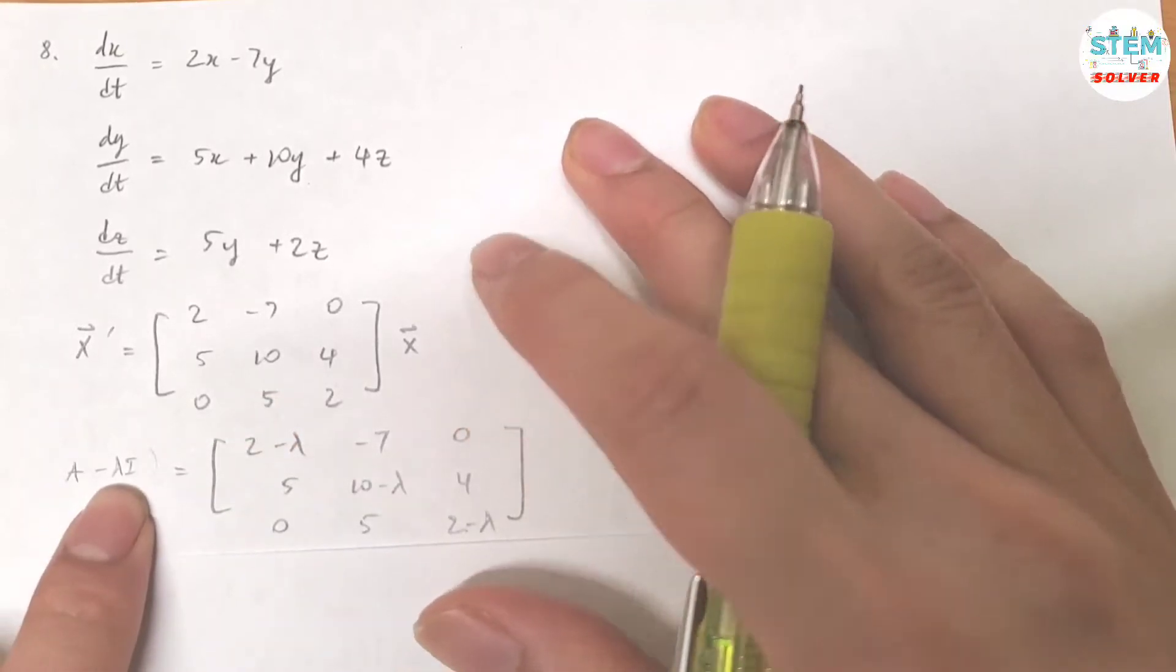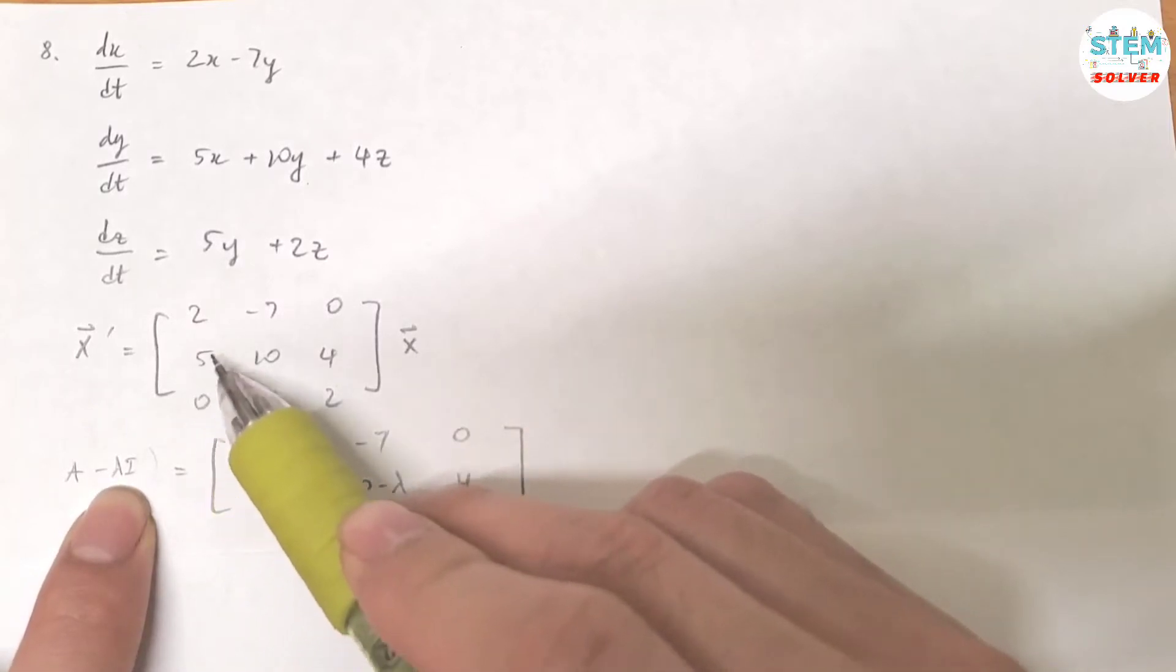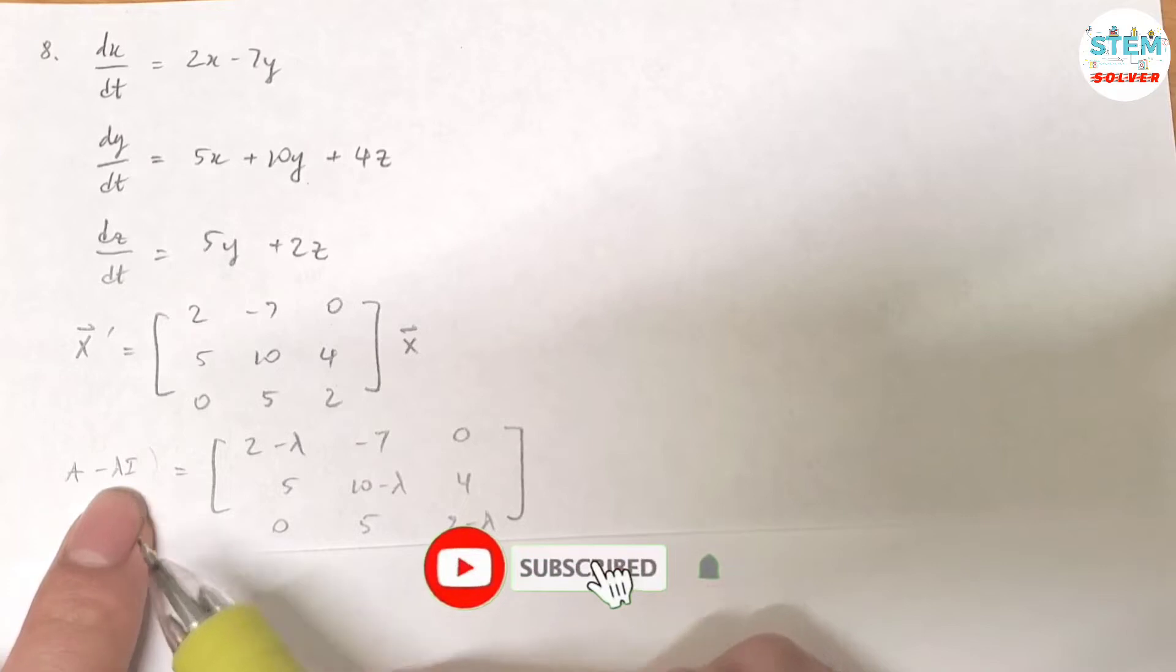Then find A minus lambda I. What is A? A is, let's call this matrix is matrix A. Then minus that with lambda I, that gives you this matrix.